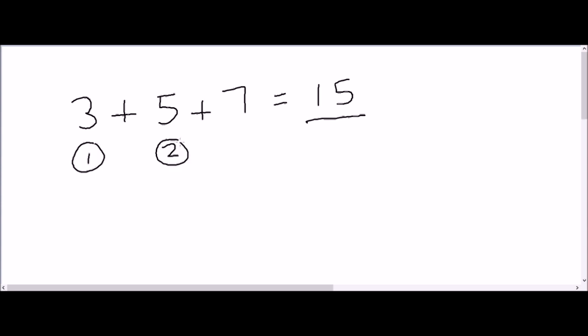The formula also says you need to divide by how many numbers there are. There are 1, 2, and 3 numbers given altogether in the set. So you do 15 divided by 3, and that comes to 5. The average of 3, 5, and 7 is 5.